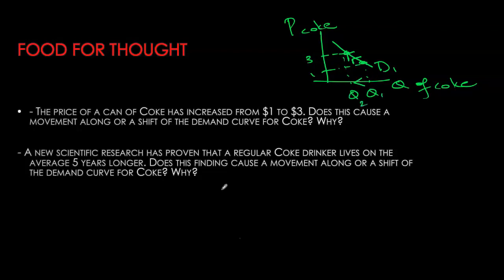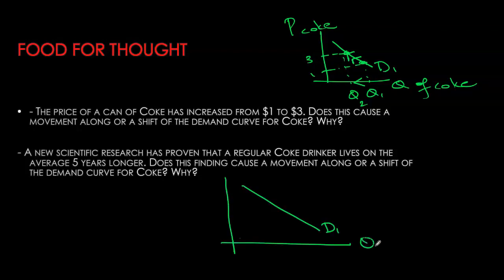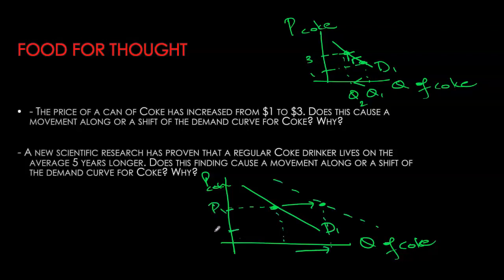In the second example, new scientific research tells us that a regular coke drinker lives on average five years longer. What will happen in this case? At any given price, consumers are now willing to drink more coke. That will give you a new coordinate point, and we can do it for various prices — P2, P3, P4, etc. — giving you a whole new set of coordinate points.